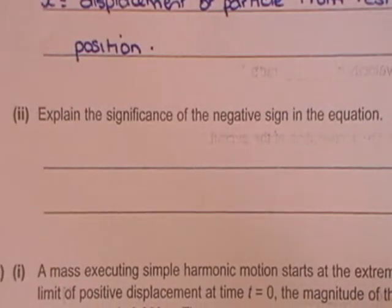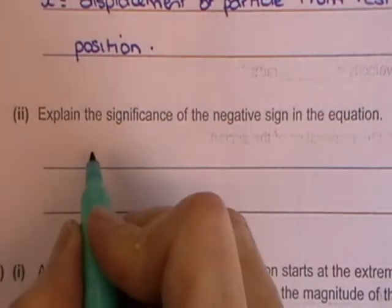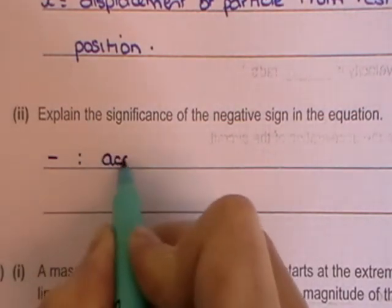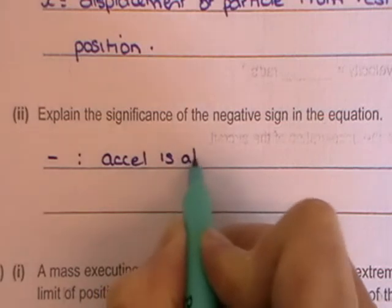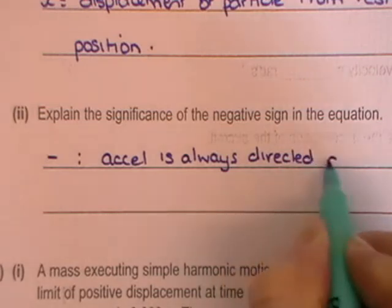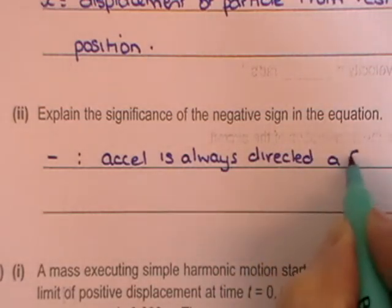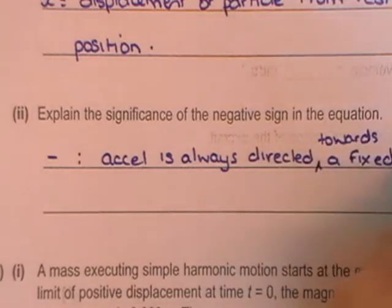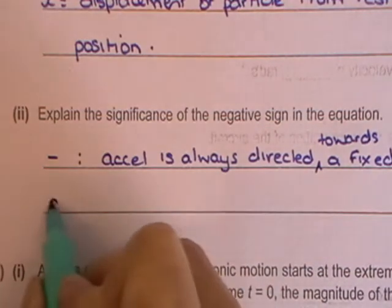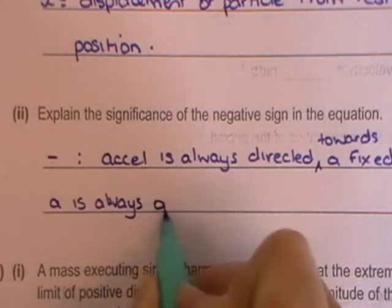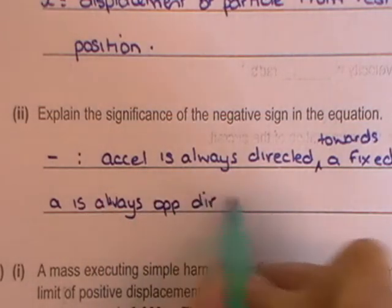Part 2, explain the significance of the negative sign in the equation. And the negative sign means that the acceleration is always directed towards a fixed point. Now, the other option that you could, they'd give you a mark there for saying that acceleration is always in the opposite direction to displacement.